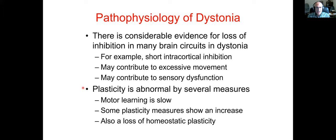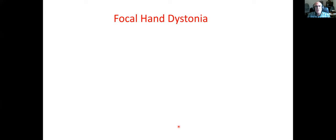The second major theme is abnormal plasticity. Plasticity is known to be abnormal in many patients who have dystonia — for example, motor learning is slow in them. There are a number of plasticity measures, one of which is called paired associative stimulation, which shows an increase. There is also a loss of an important phenomenon called homeostatic plasticity, which we will talk about in some detail and how it can potentially relate to the development of abnormal movements.